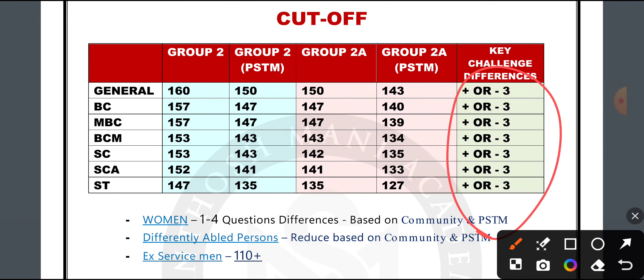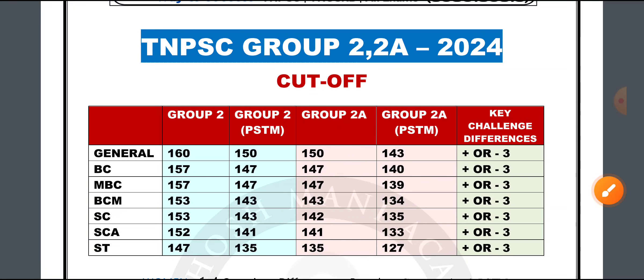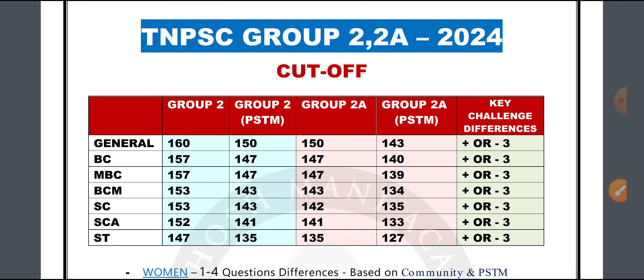Now, there is a change in the cutoff — there is another plus or minus 3. So now we are getting a tentative answer. That is a tentative answer; we can't be fully certain. But that is not your number of questions, no matter what you are getting. Now we are getting the tentative answer and the key challenge. That is why we are getting the result.